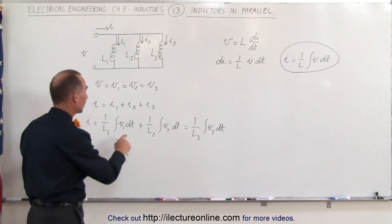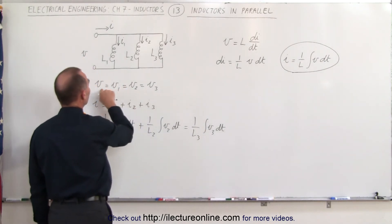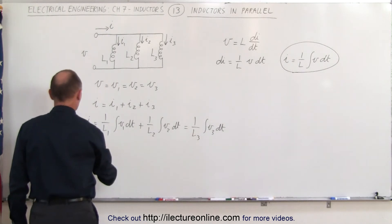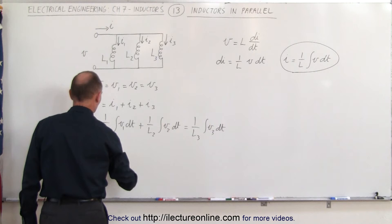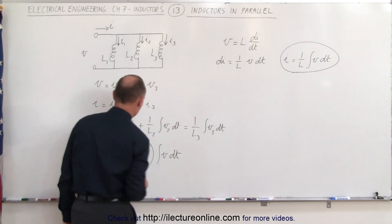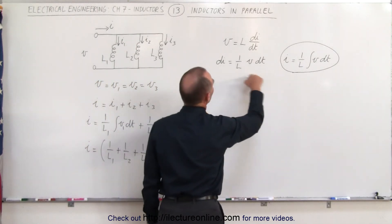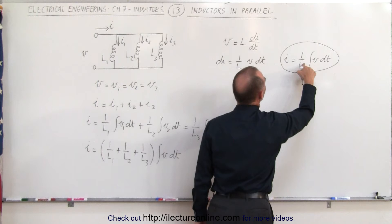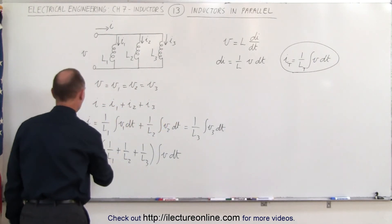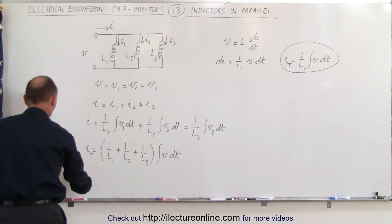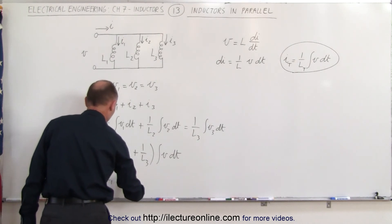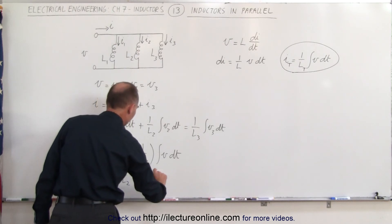Now of course we don't need the subscripts because V1, V2, and V3 are all equal to each other, which is equal to the total voltage applied to the circuit. This means we can factor out the integral of V dt, so the current I is equal to the quantity 1 over L1 plus 1 over L2 plus 1 over L3 times the integral of V dt. Since I total is equal to 1 over L total times the integral of V dt, this can be written as 1 over L total times the integral of V dt equals the quantity 1 over L1 plus 1 over L2 plus 1 over L3 times the integral of V dt.